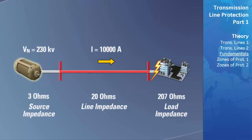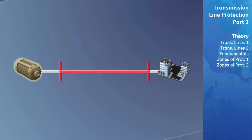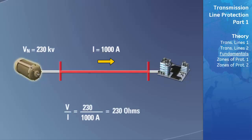Due to the drop in impedance, the current level would now increase substantially. The operating principle of distance protection works in the following way: the magnitude of current and voltage is measured at the beginning of the transmission line, and using these measurements calculates a ratio of voltage over current, which gives you a value equal to the impedance of the total power system. When a fault occurs, thus cutting off the path of current to some of the load, the impedance of the power system will decrease, causing the current to increase and the voltage to decrease slightly.